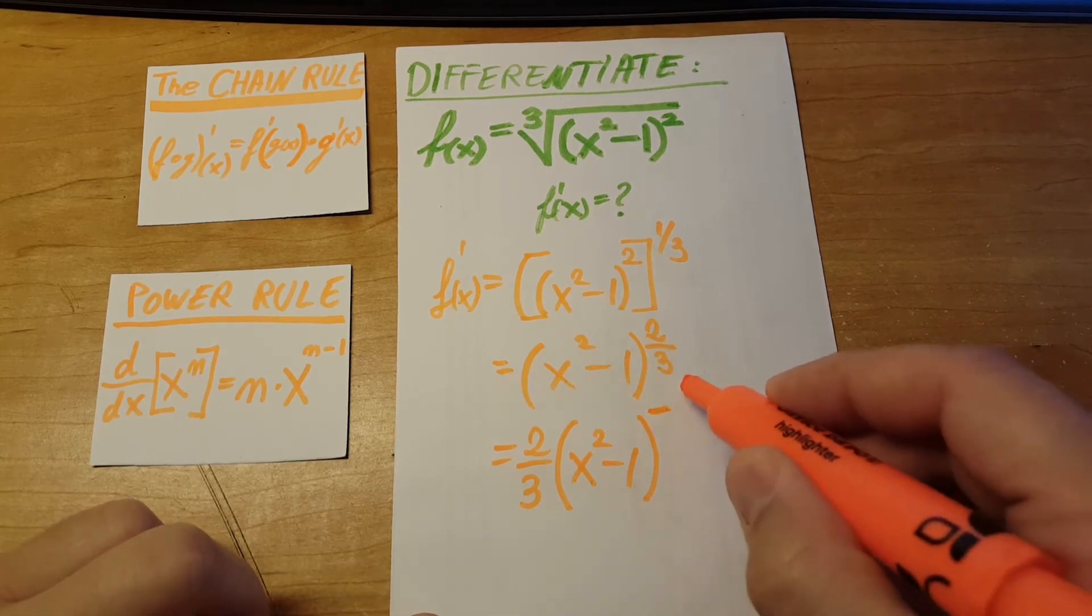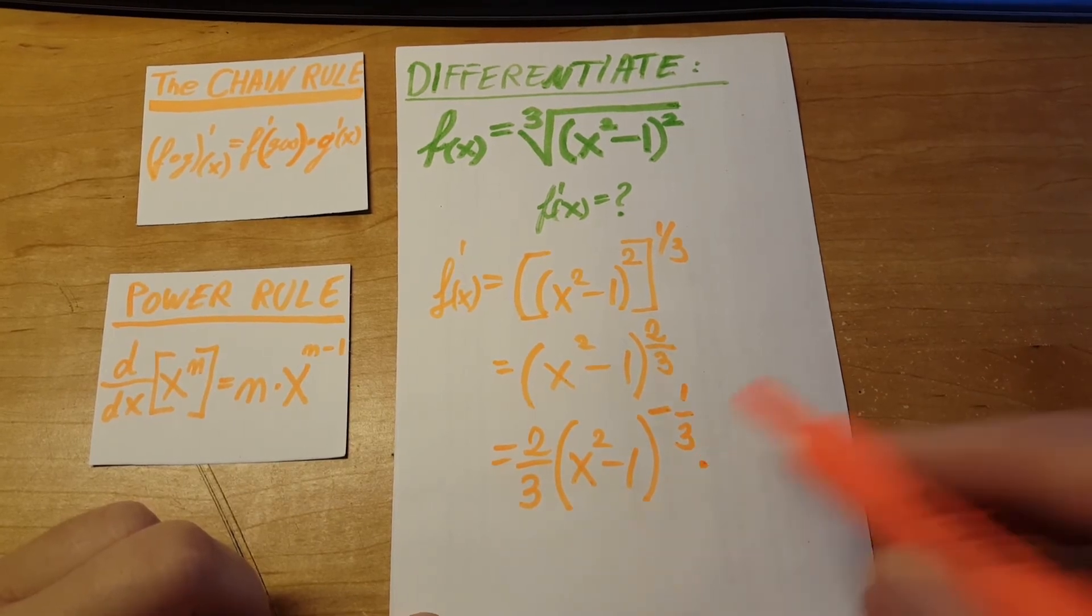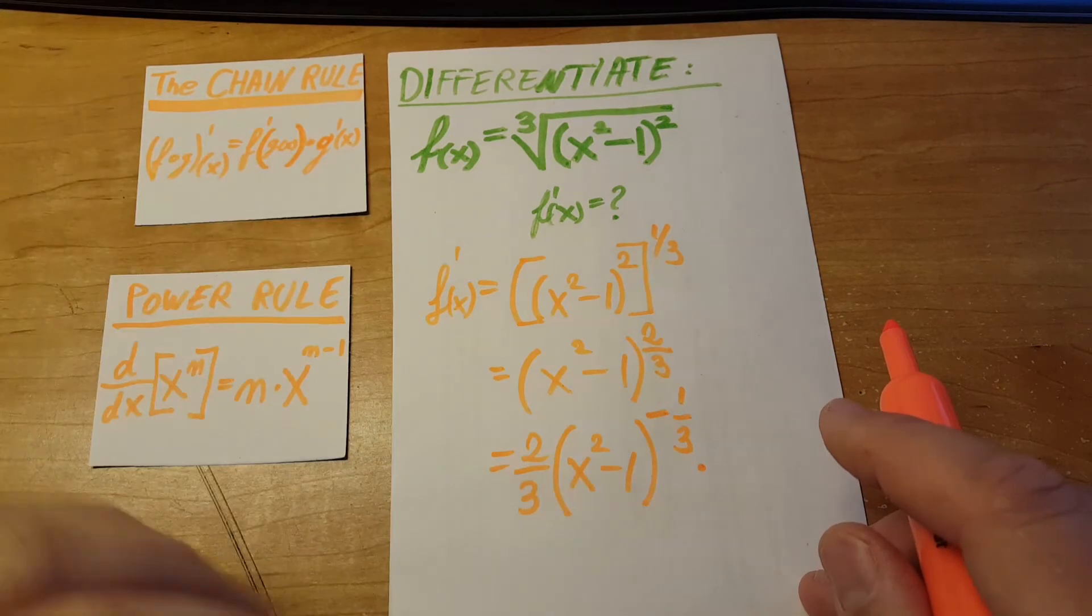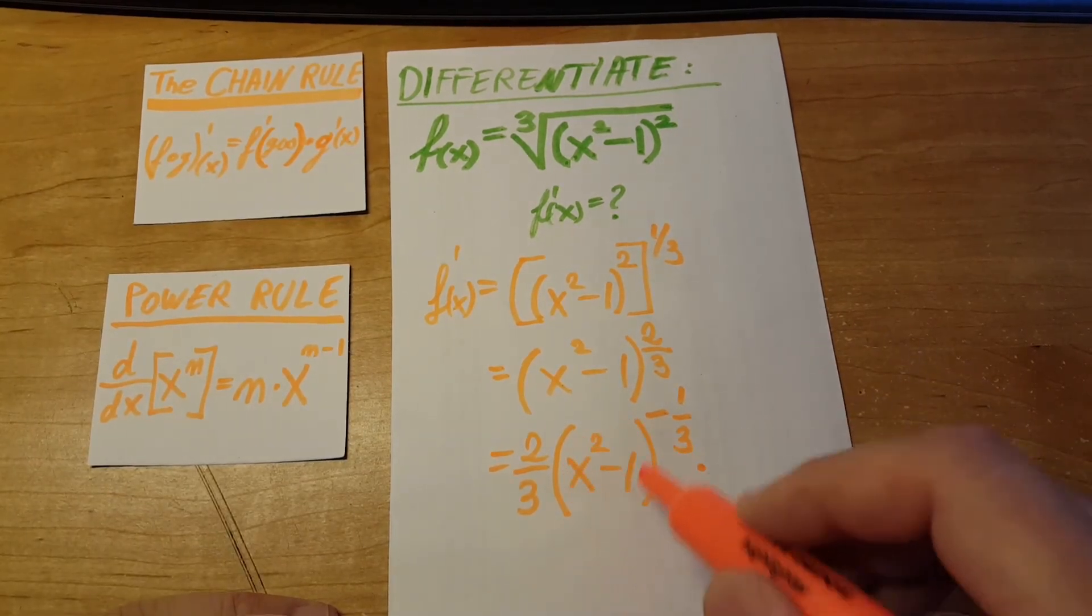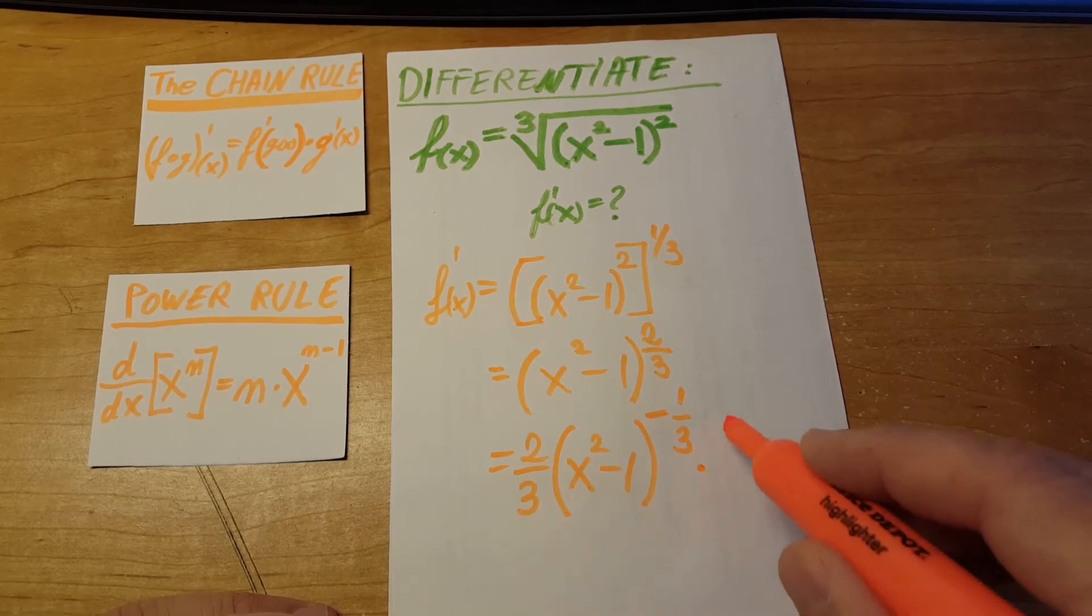So that's going to be negative one third times from the chain rule. We know that we need to multiply with the second part with the inside. So x square minus one derivative of that one is just two x.